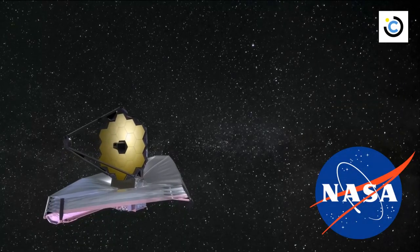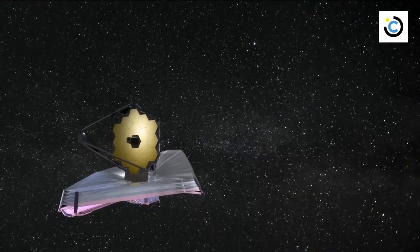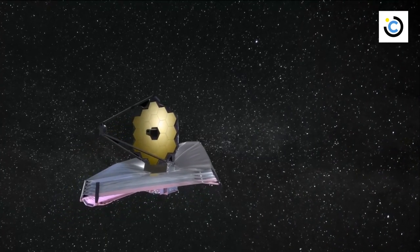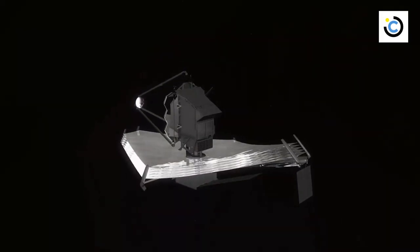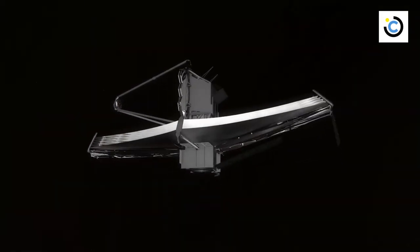As revealed by NASA, these observations were made possible by a collaboration of scientists who developed two of Webb's instruments, the near-infrared camera and the near-infrared spectrograph. This instrument was designed to study the faintest and earliest galaxies.